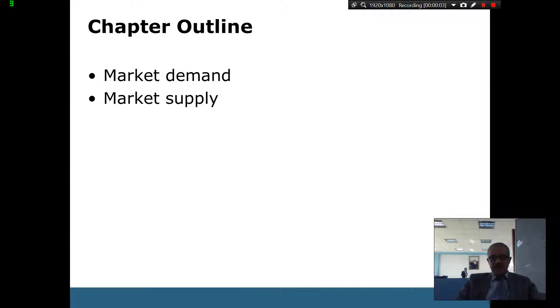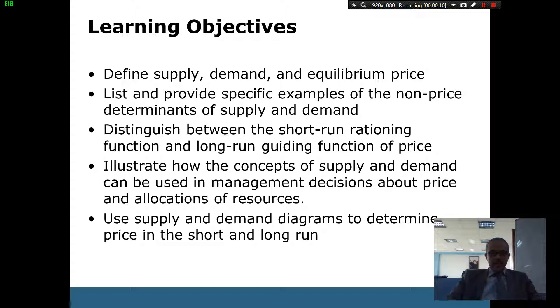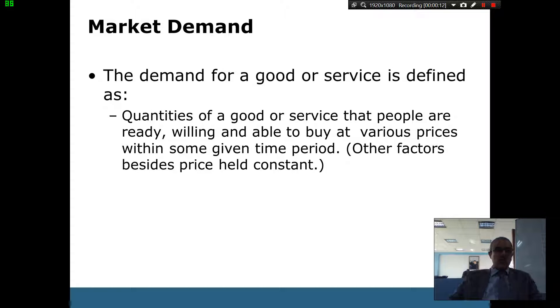Chapter 3, we talk about supply and demand. In this chapter, we talked about supply, demand, equilibrium, comparative supply, demand, and pricing. These were the learning objectives, and we start with market demand.